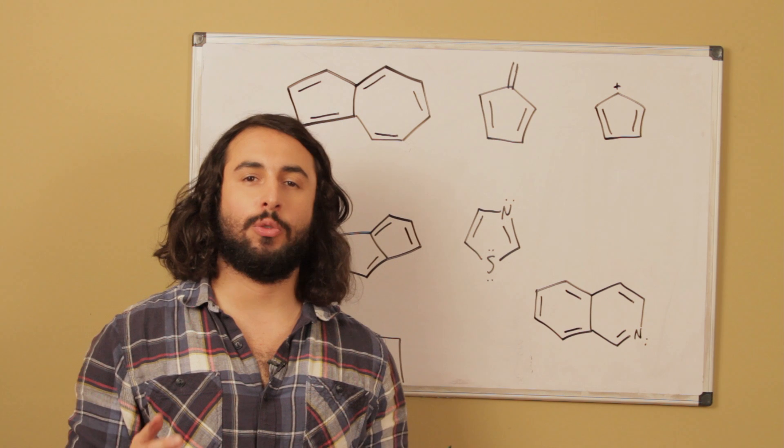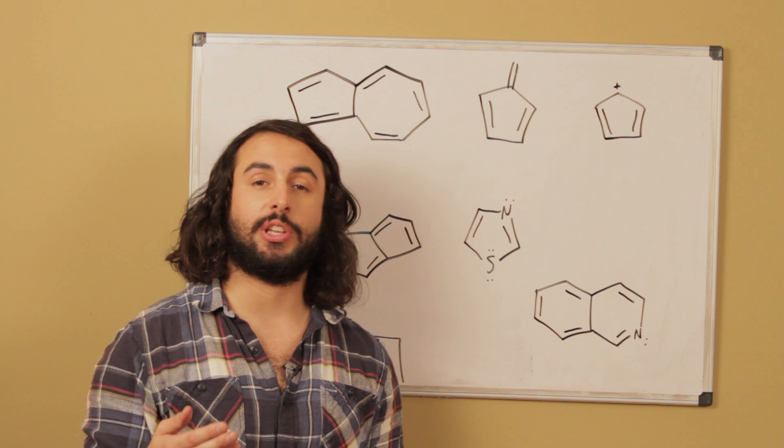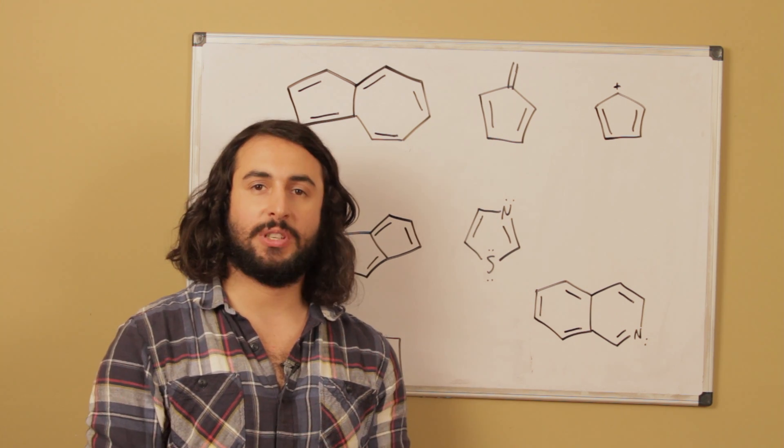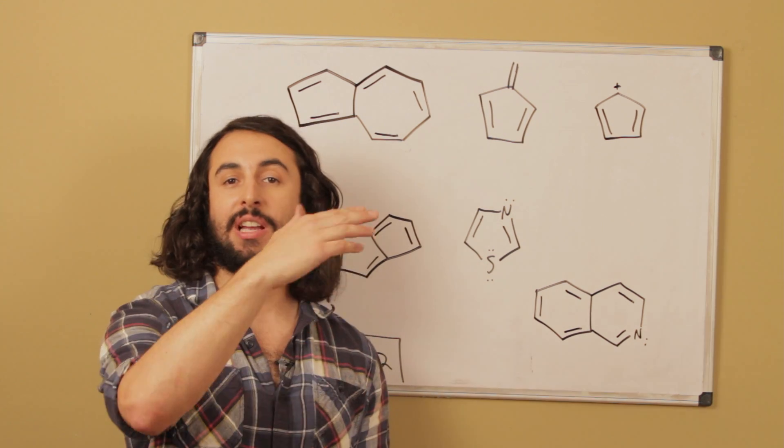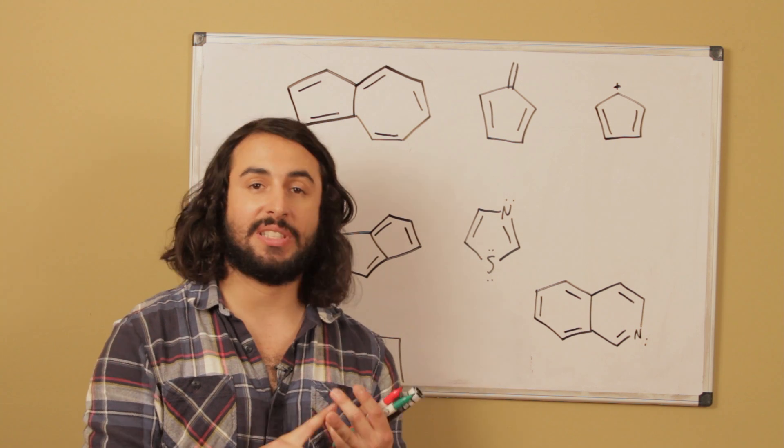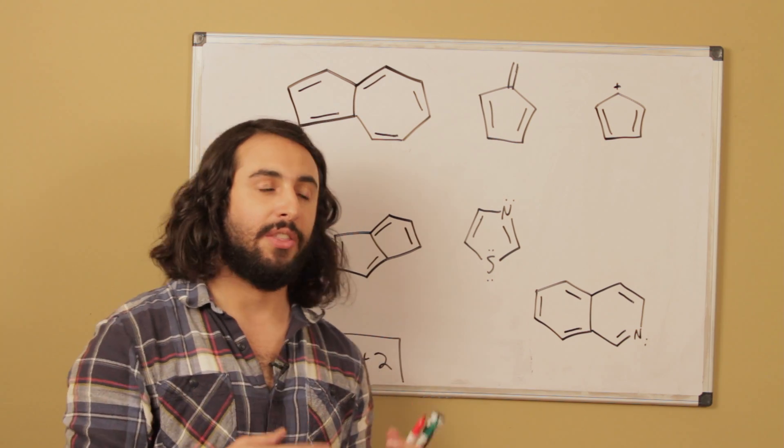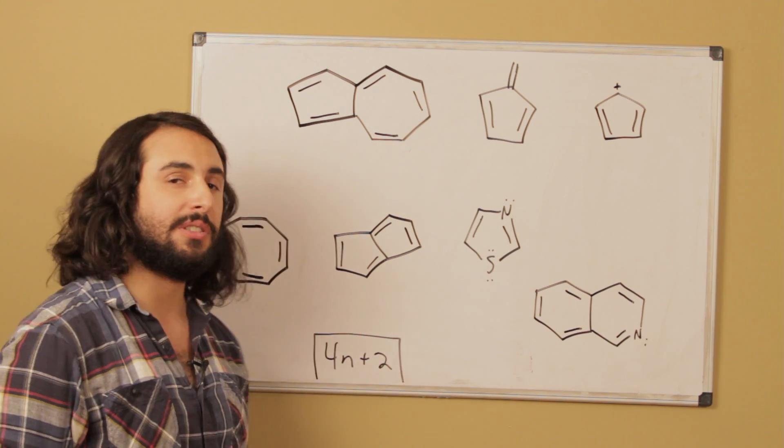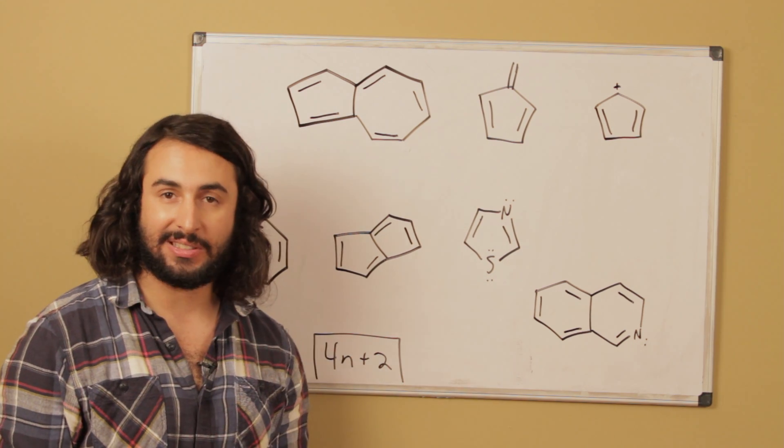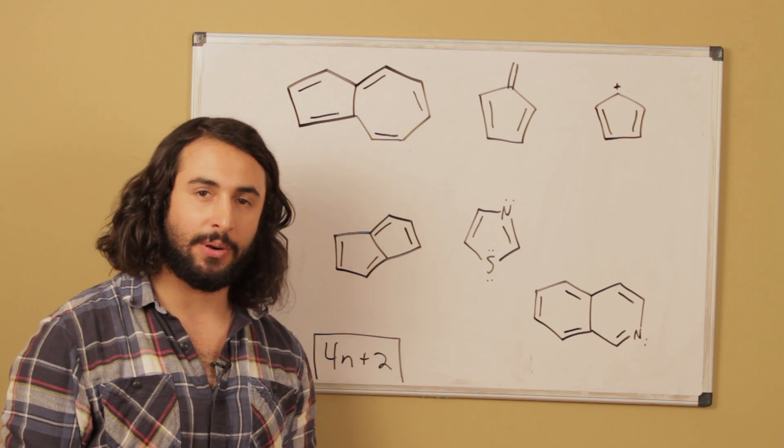Okay, so when we're thinking about aromaticity let's recall that there are three criteria that must be satisfied for a molecule to be aromatic. Number one, it must be completely planar. Number two, it must be fully conjugated. The pi electrons have to be fully conjugated around the entire ring or set of rings. And lastly it must satisfy Huckel's rule. That is there must be a number of pi electrons in conjugation that are equal to 4n plus 2 where n can be any integer. So if n is 0 you get 2, so 2 is an acceptable number. If n is 1 you get 6, so 6 is an acceptable number and so forth.